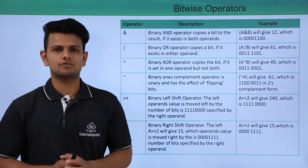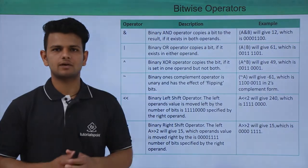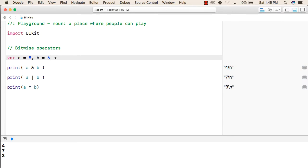Now, let us practically see an implementation of all these operators on our playground. To perform bitwise operations first we have declared two variables with values 5 and 6 respectively.